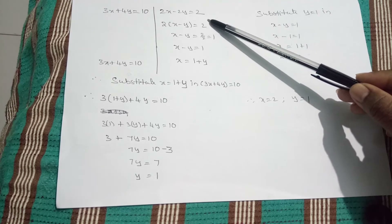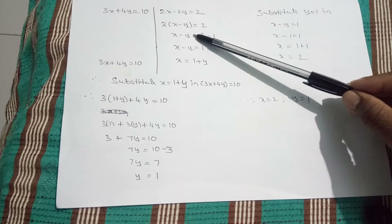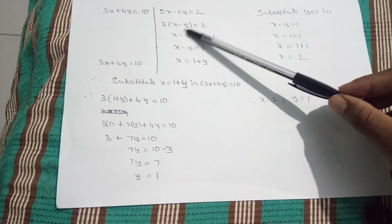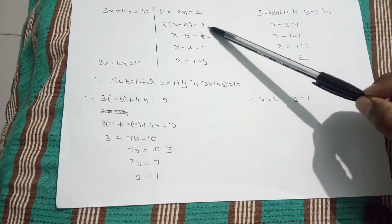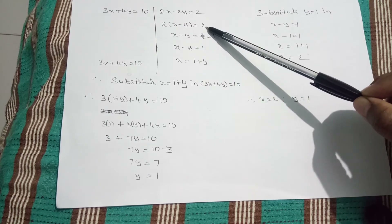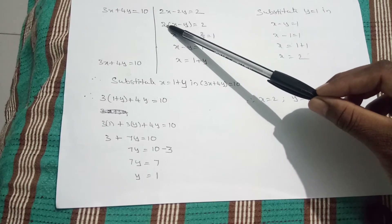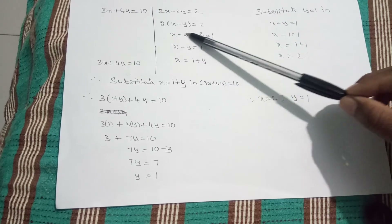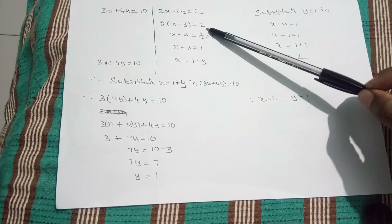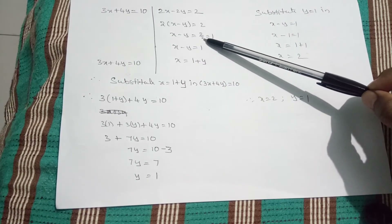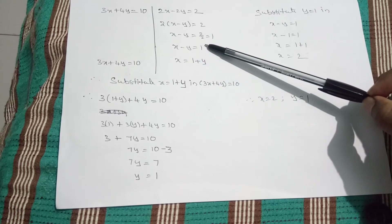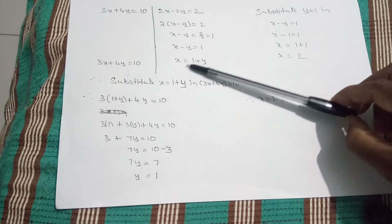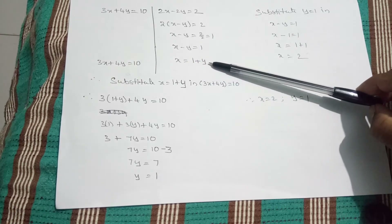Take the 2 common in the LHS — and the RHS already has 2. So 2 is multiplied on both sides; when it goes to the RHS, 2 divided by 2 gives 1. This gives us x minus y equal to 1. Therefore, x is equal to 1 plus y.